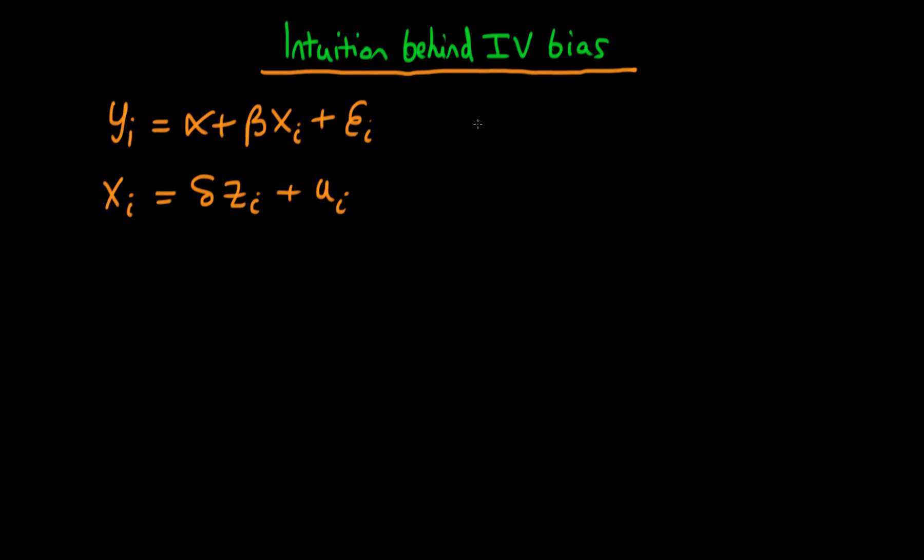And we know that in finite samples that beta hat IV or the expectation of beta hat IV in general does not equal beta, even in the circumstances where we have a covariance of z and epsilon which is equal to zero. And by covariance here I mean a population covariance between z and epsilon which equals zero. So I wanted to provide some intuition as to why this is.